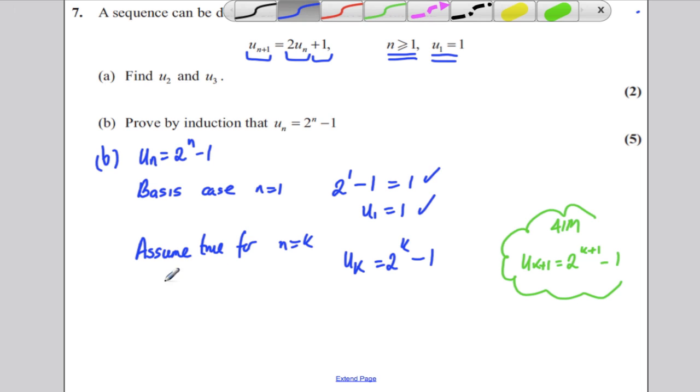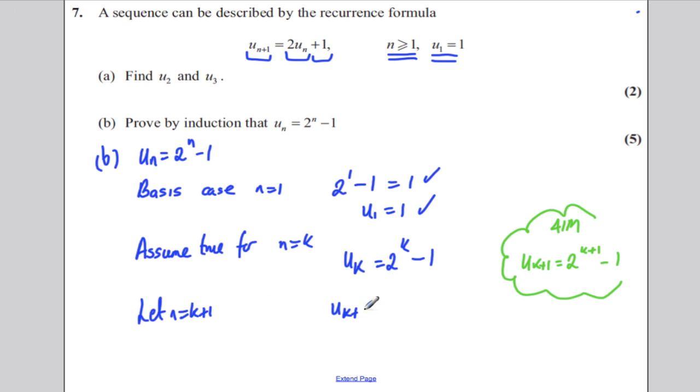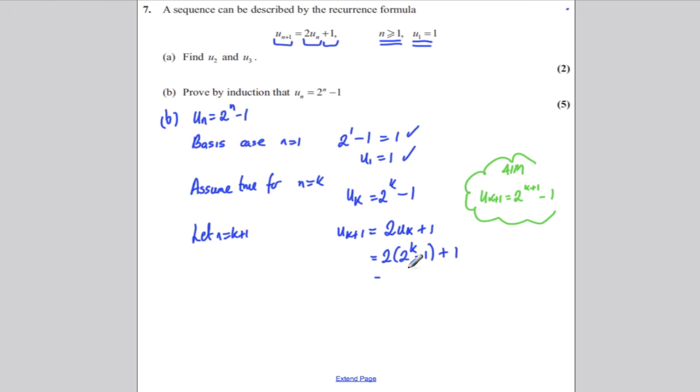So now the next step, you let n equal k plus one. And you say that U(k+1), with the only thing we know about it for a fact, is it satisfies this formula. So it's 2*Uk plus one. But by the part above, we can substitute Uk for 2^k subtract one. So this is 2*(2^k - 1) + 1. Times that out. Two times 2^k is 2^(k+1). Two times negative one is negative two. And we've still got the plus one.